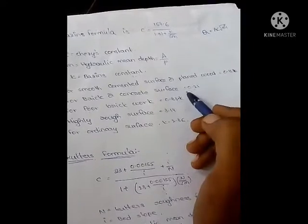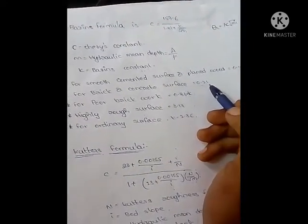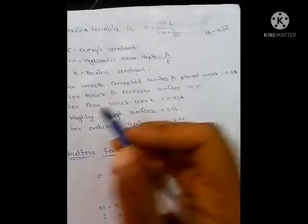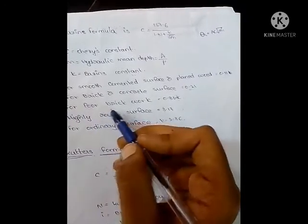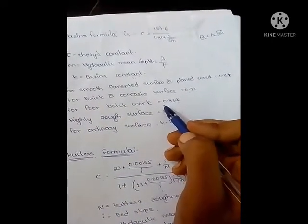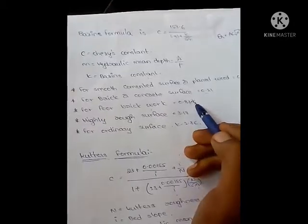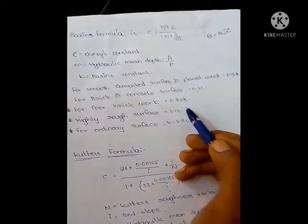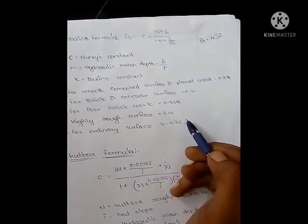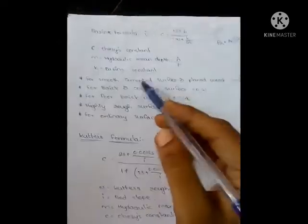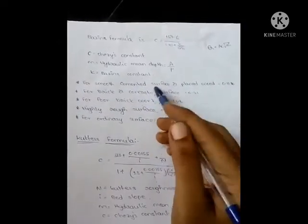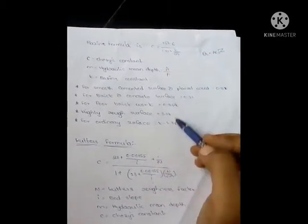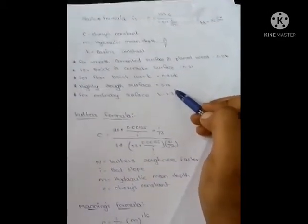If the channel is brick or concrete surface, the Bayesian's constant will be 0.21. If the channel is poor brick work, we use 0.83. For highly rough surface we use 3.17, and for ordinary surface we use 2.36. Bayesian's constant will be given in problems. If not given, the type of channel surface will be given based on which we take these values.